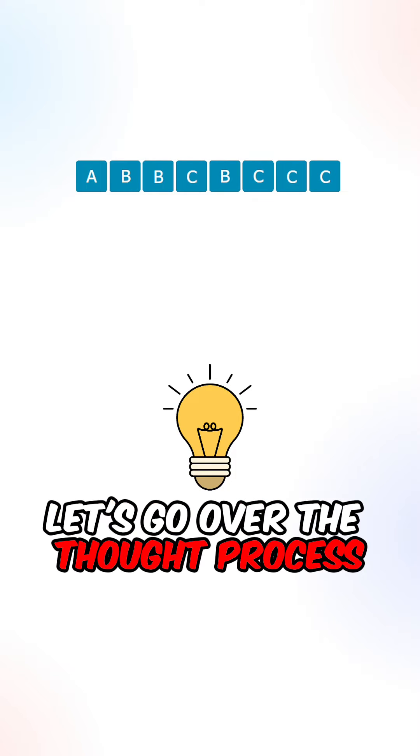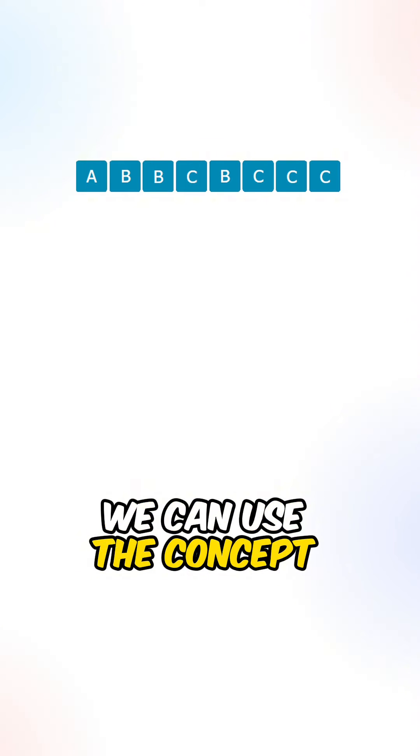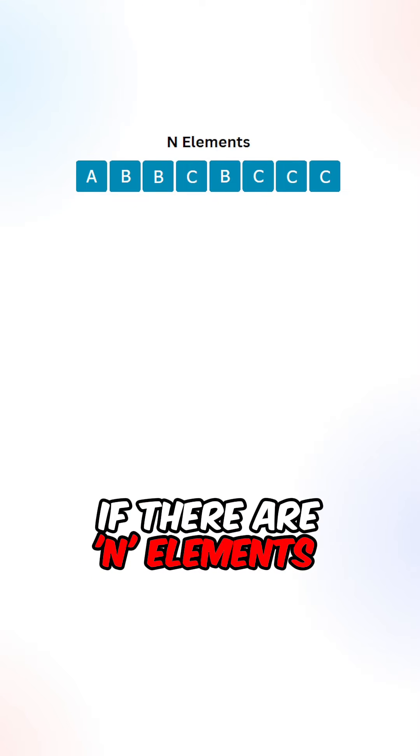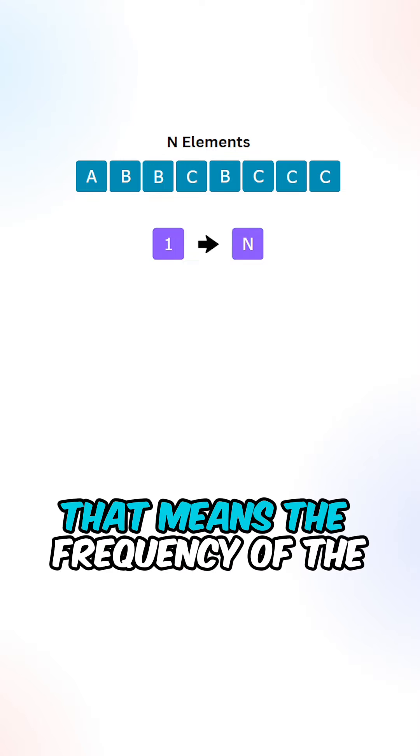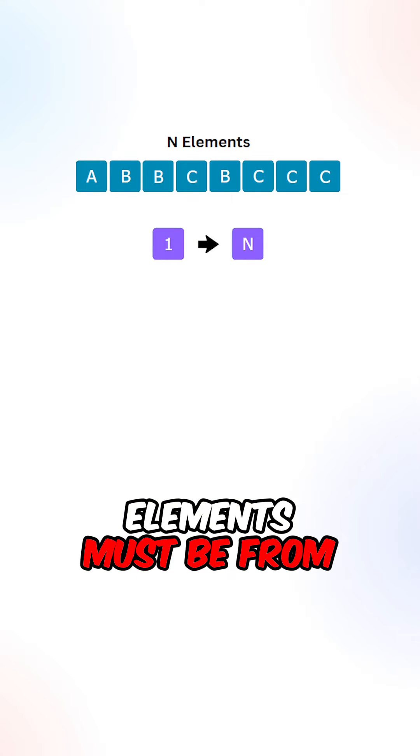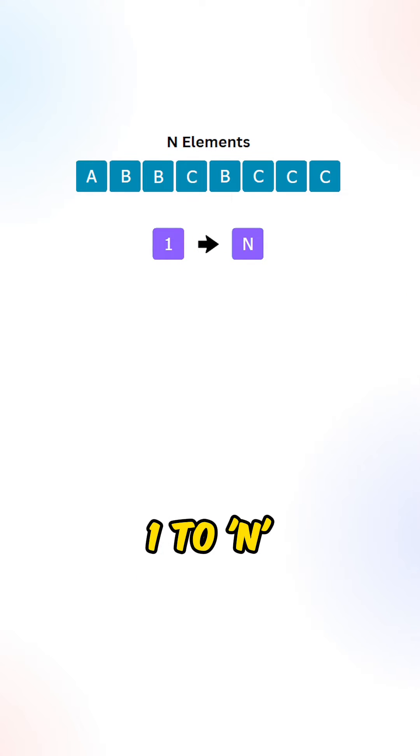Let's go over the process. We can use the concept from bucket sort. If there are n elements in the array, that means the frequency of each element must be from 1 to n.